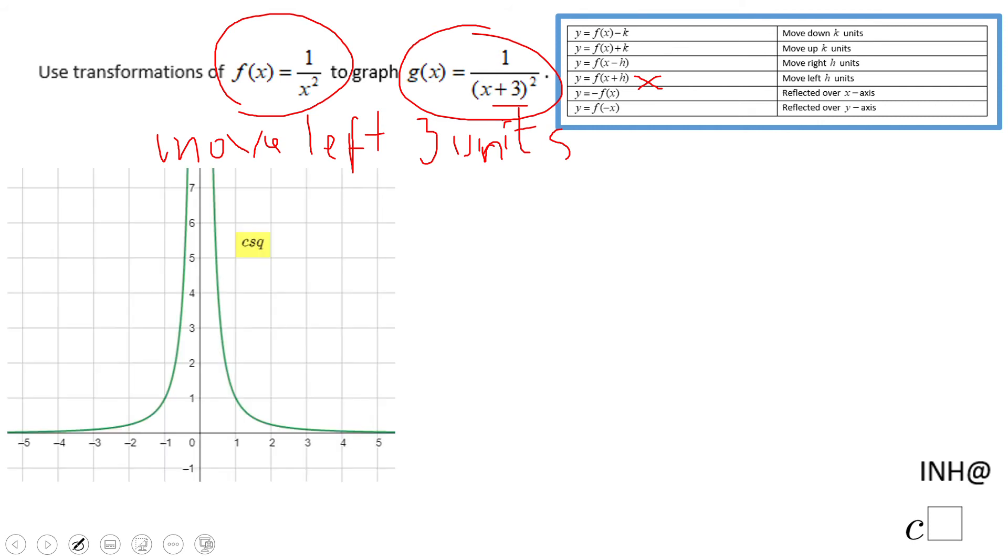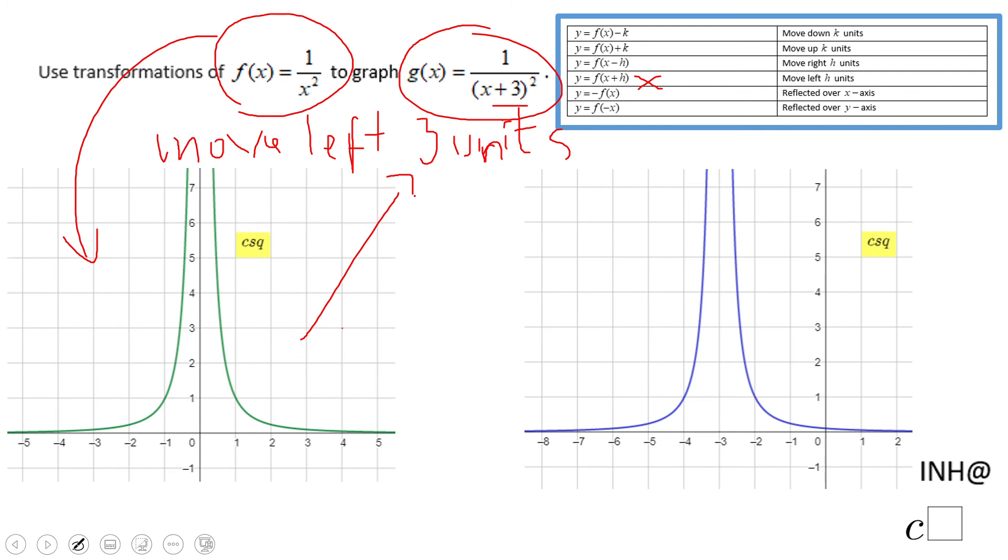This is the graph of f of x, the pattern graph. The graph of g of x is going to be the same like this, just three units left. You see the graph right here, how the graph was moved left three units. That's it.